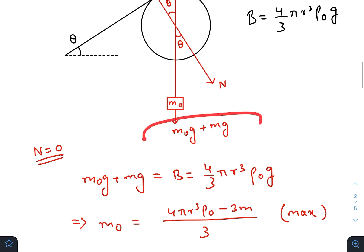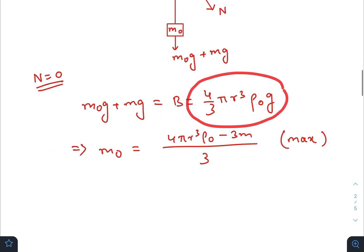So the downward force is balanced by the buoyancy force. So we will get the maximum value, this one. So for maximum, the range of m0 should be less than this value. It should not be less than equal to, it should be less than.